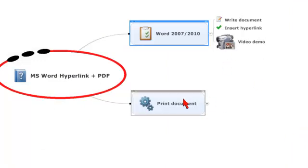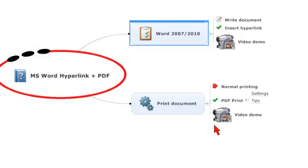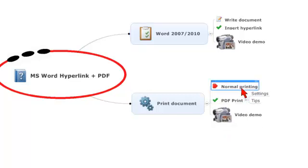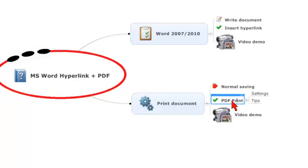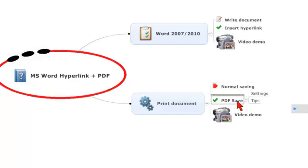Let's go to the next step, which is saving that document. Instead of just printing it, I'm going to change that to Normal Saving, and here I'm going to save it as a PDF. So here we have the Normal Saving, where you would just save it as a Word document as usual. But in this case, what we're going to do is show you how to make it into a PDF and the settings associated with that.